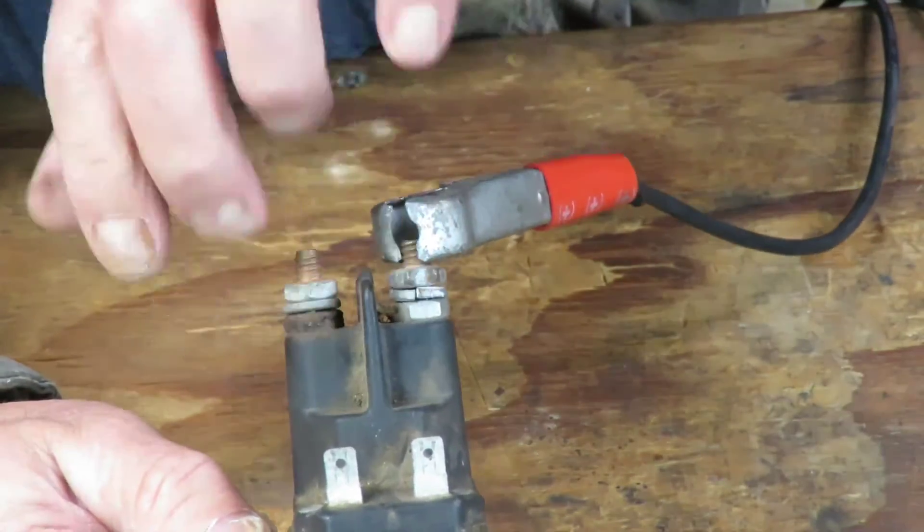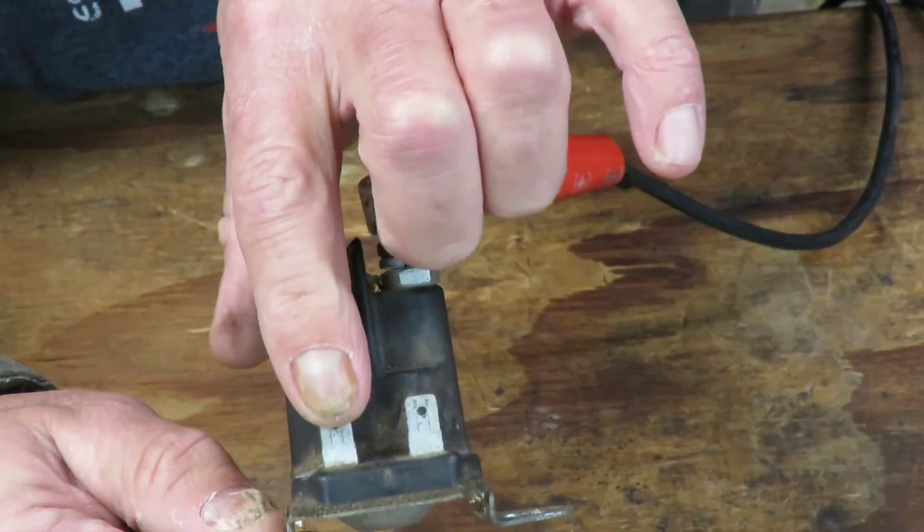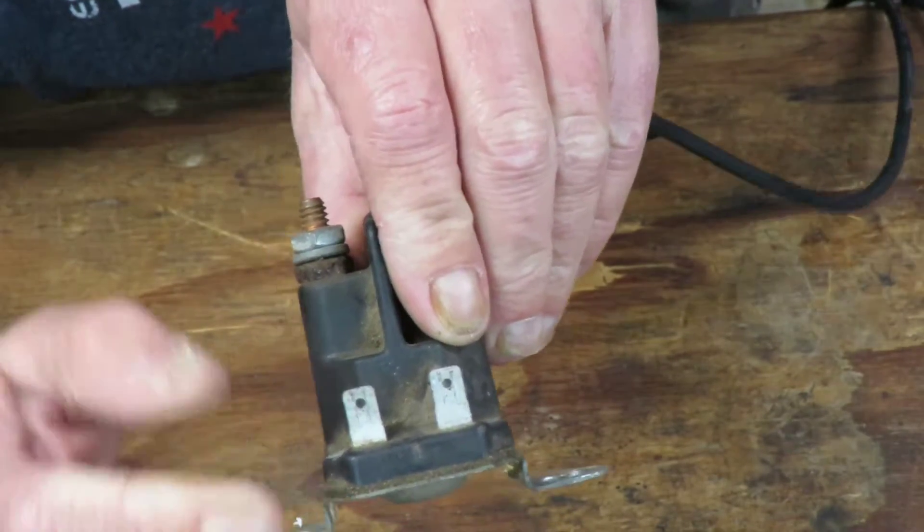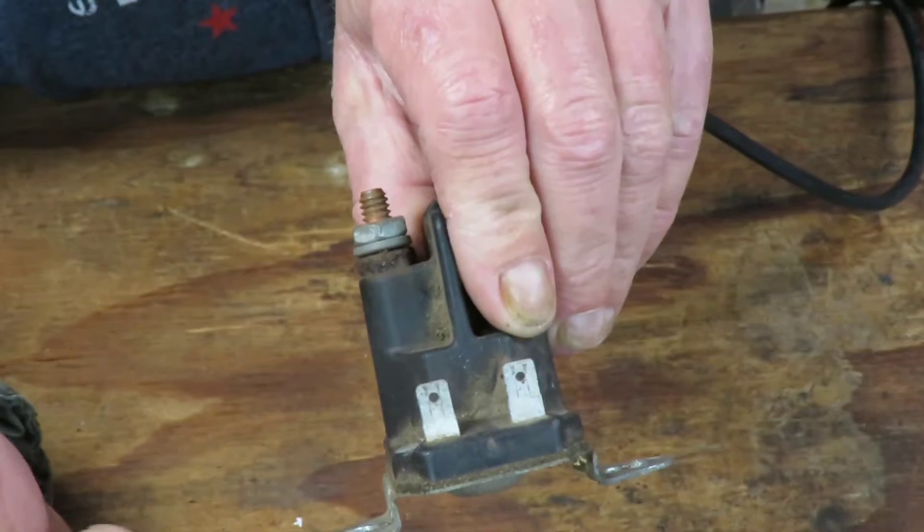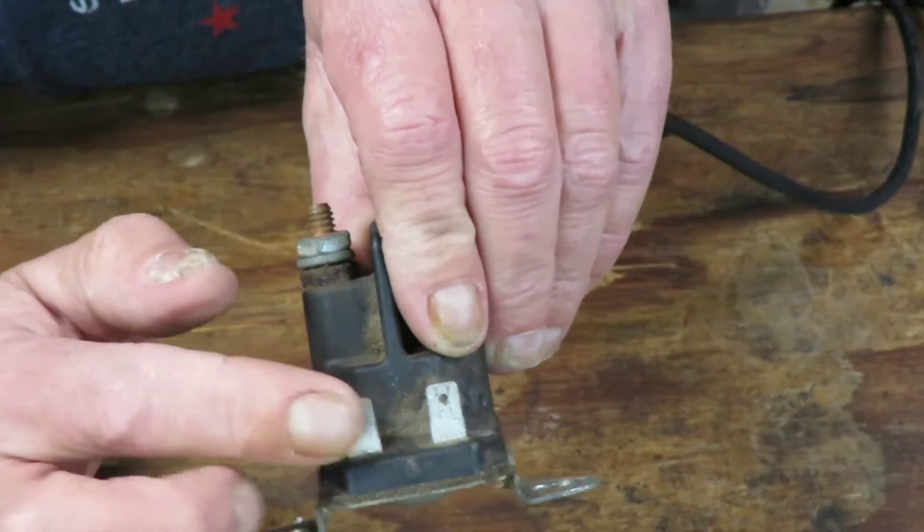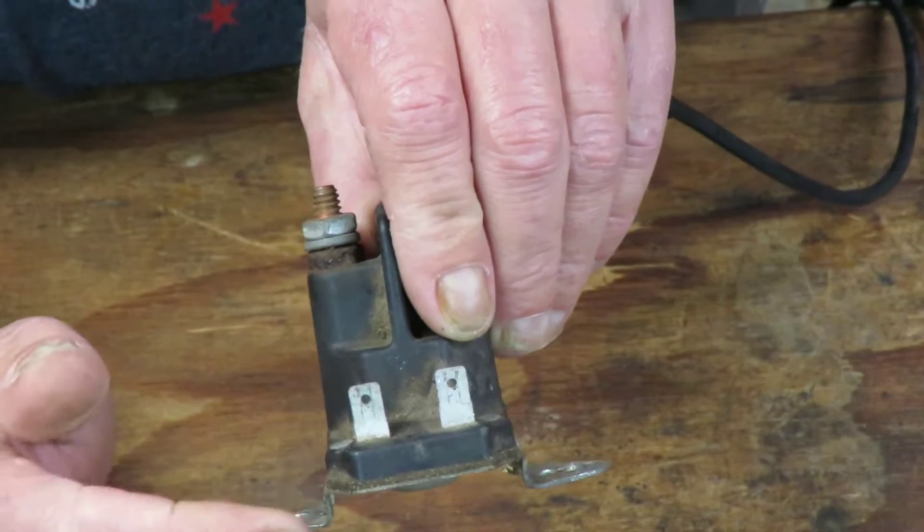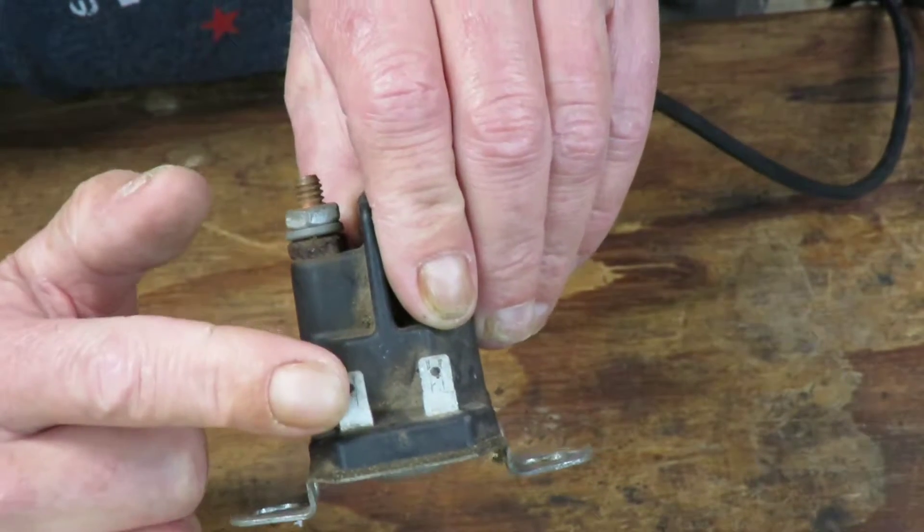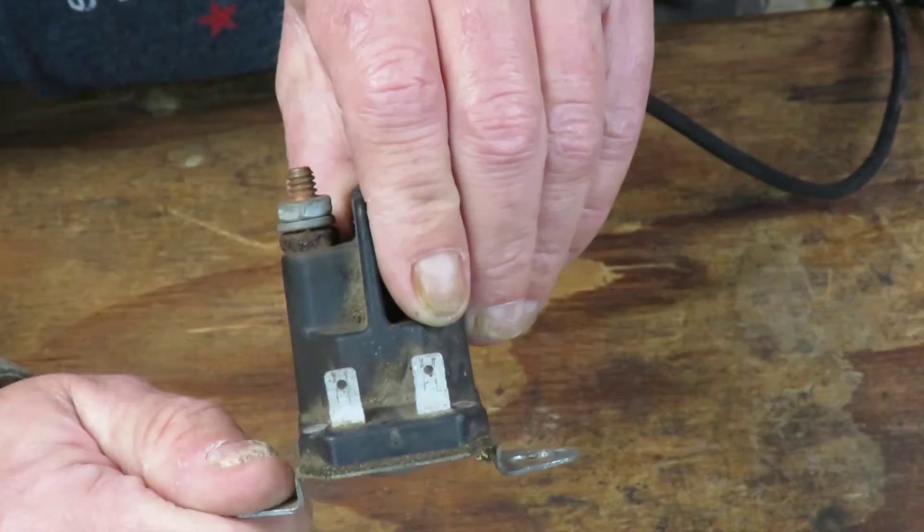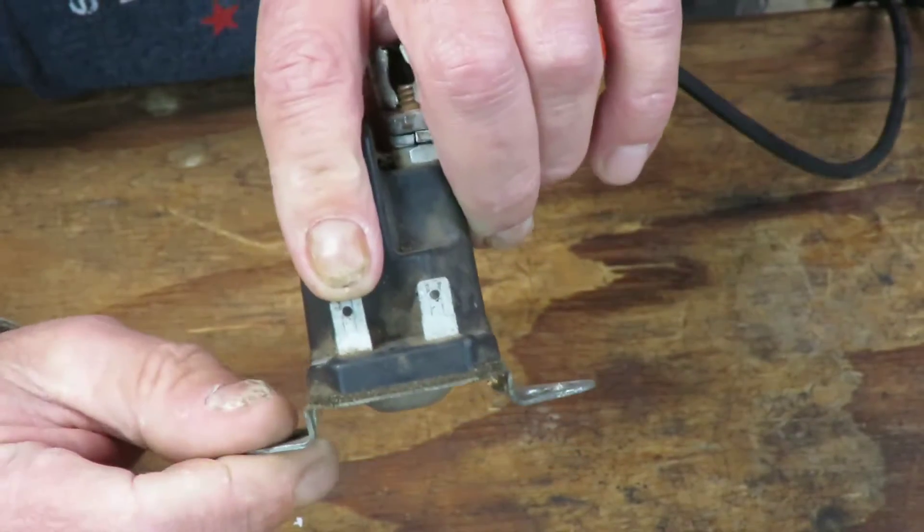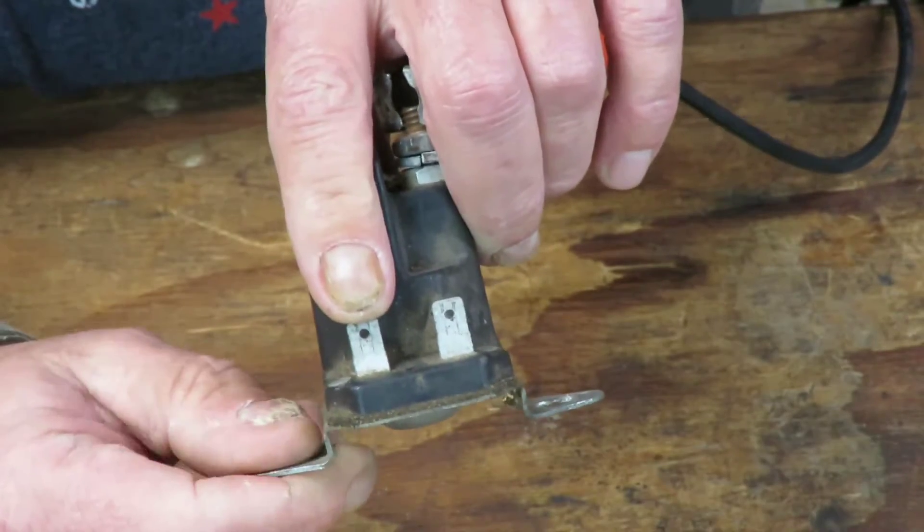Because like I said that's the only difference, one's grounded to this second post. The single terminal solenoid that only has one of these, it's grounded to the base. So all you got to do is take one of these posts and ground it to the base, and then when you mount this to the frame it's grounded through the frame and it will work.